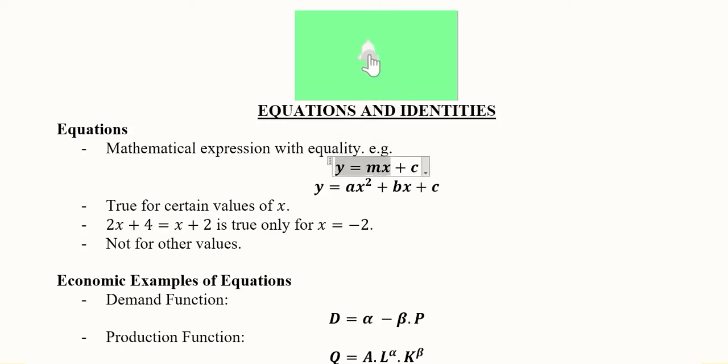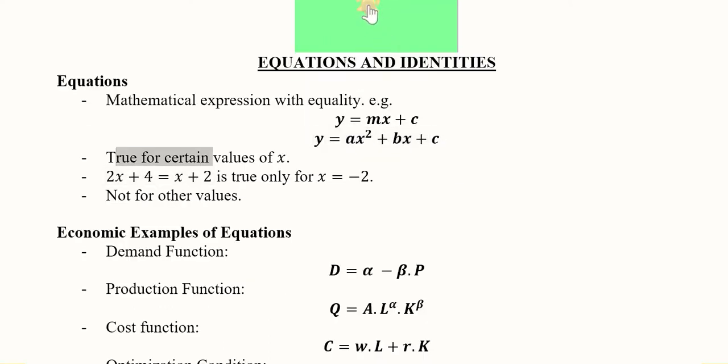For instance, we have the slope intercept form of the straight line equation. We also have the quadratic equation. So these are equalities because the sign of equality is appearing in them and we have the outcome of it.